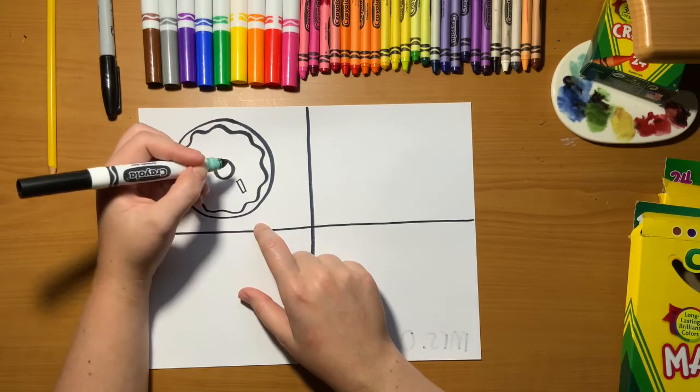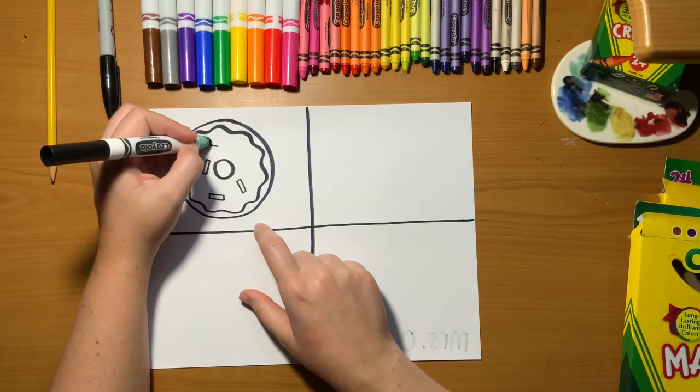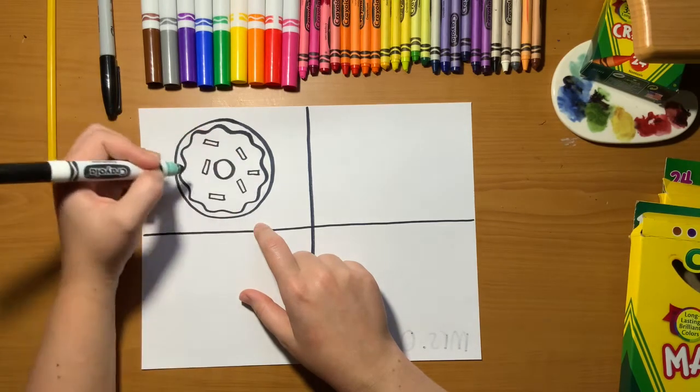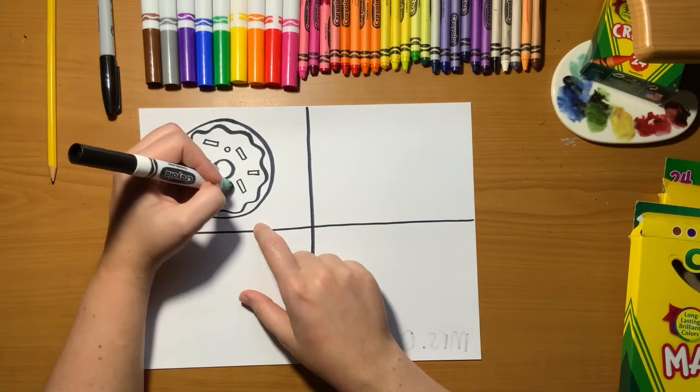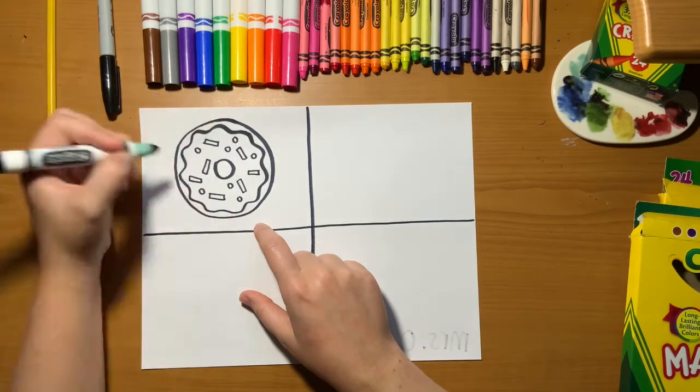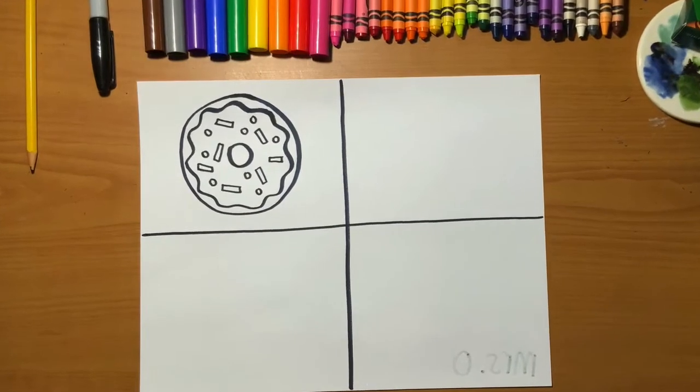Next, you can add tiny little rectangles or any shape for sprinkles. I'm using tiny little rectangles and then I'm adding little dots for sprinkles as well. You can add sprinkles if you want or you don't have to. It's totally up to you. I'll give you a few seconds to finish drawing your donut just in case you need to catch up.